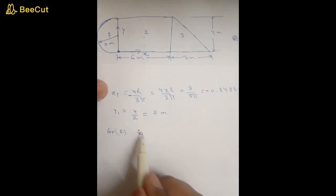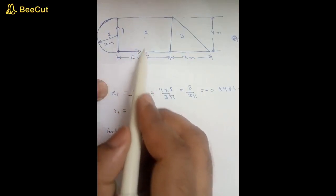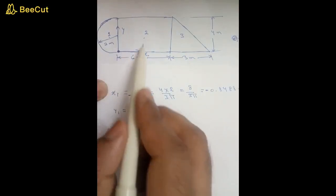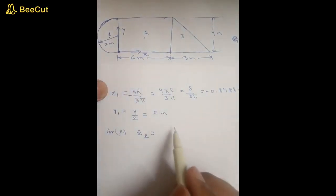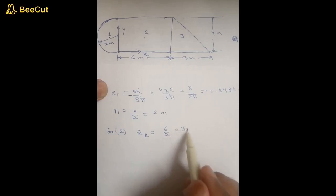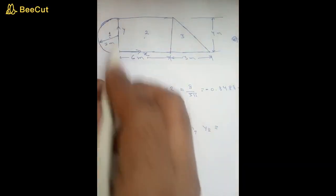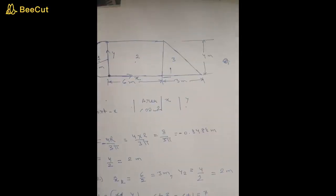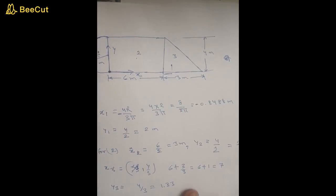For part 2, the rectangle's centroid will be at its middle point. So x2 will be half of the 6-meter length: 6 by 2 equals 3 meters. And y2 will be half of the 4-meter height: 4 by 2 equals 2 meters.